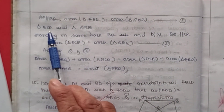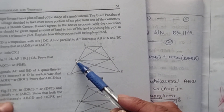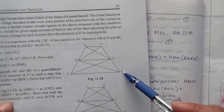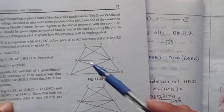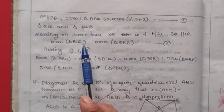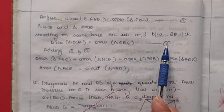Similarly, triangles BCQ and QRB stand on the same base BQ with CR parallel to BQ, so area of triangle BCQ is equal to area of triangle QRB. This is equation 2.